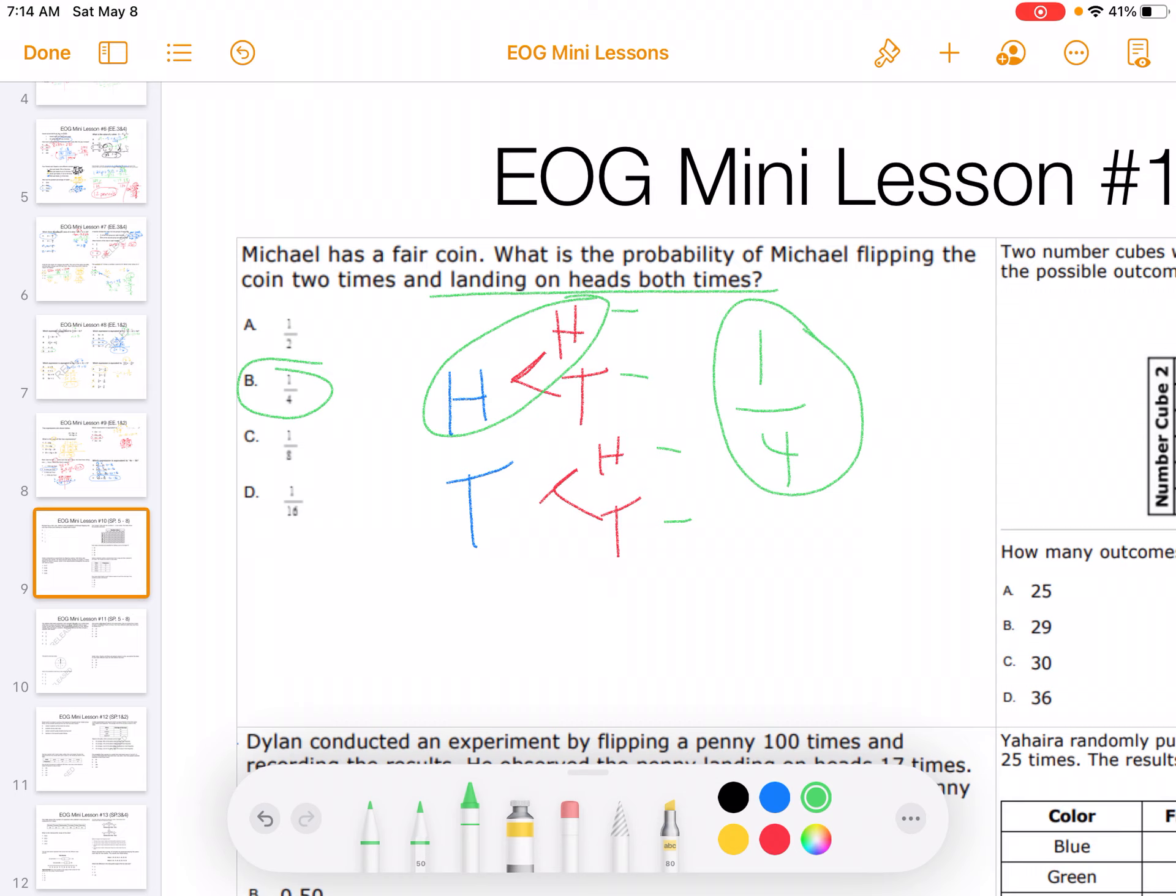Or I could have done 1 half, because 1 out of 2 times for heads, times 1 half because of 1 out of 2 times for the heads on the second coin and gotten 1 fourth that way. It doesn't matter. You choose your strategy.